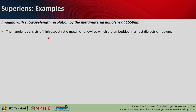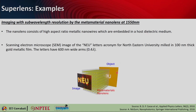The nano lens at 1550 nm consists of high aspect ratio metallic wires embedded in a host dielectric medium. The object imaged was the 'NEU' letter, standing for Northeastern University, milled in a 100 nm thick gold metallic film with 600 nm wide arms. The lens captures and amplifies evanescent waves so the image of this particular object can be clearly captured. These are examples of super lenses used in different frequency regimes.